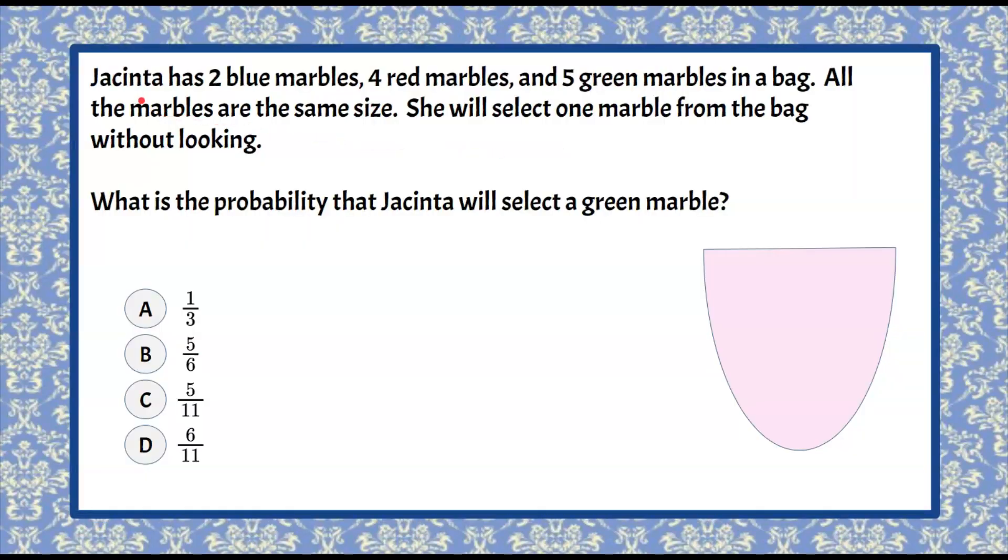We have Jacinta who has two blue marbles, four red marbles, and five green marbles in a bag. All the marbles are the same size. She will select one marble from the bag without looking. What is the probability that Jacinta will select a green marble?